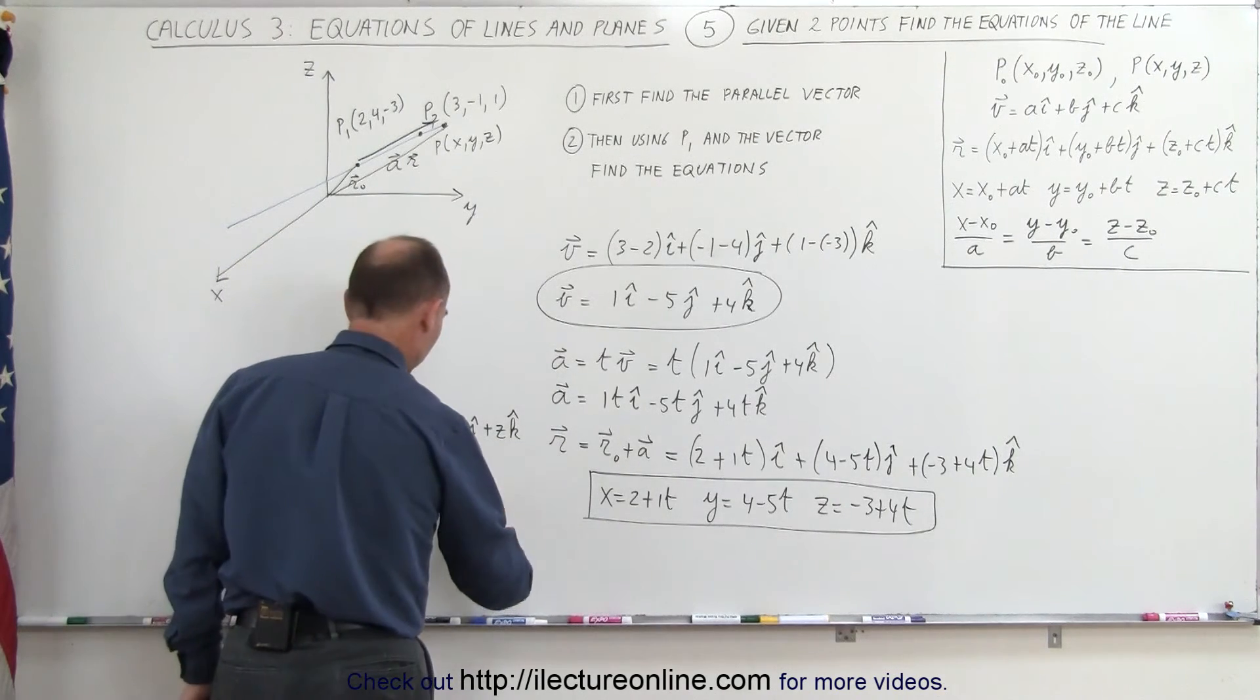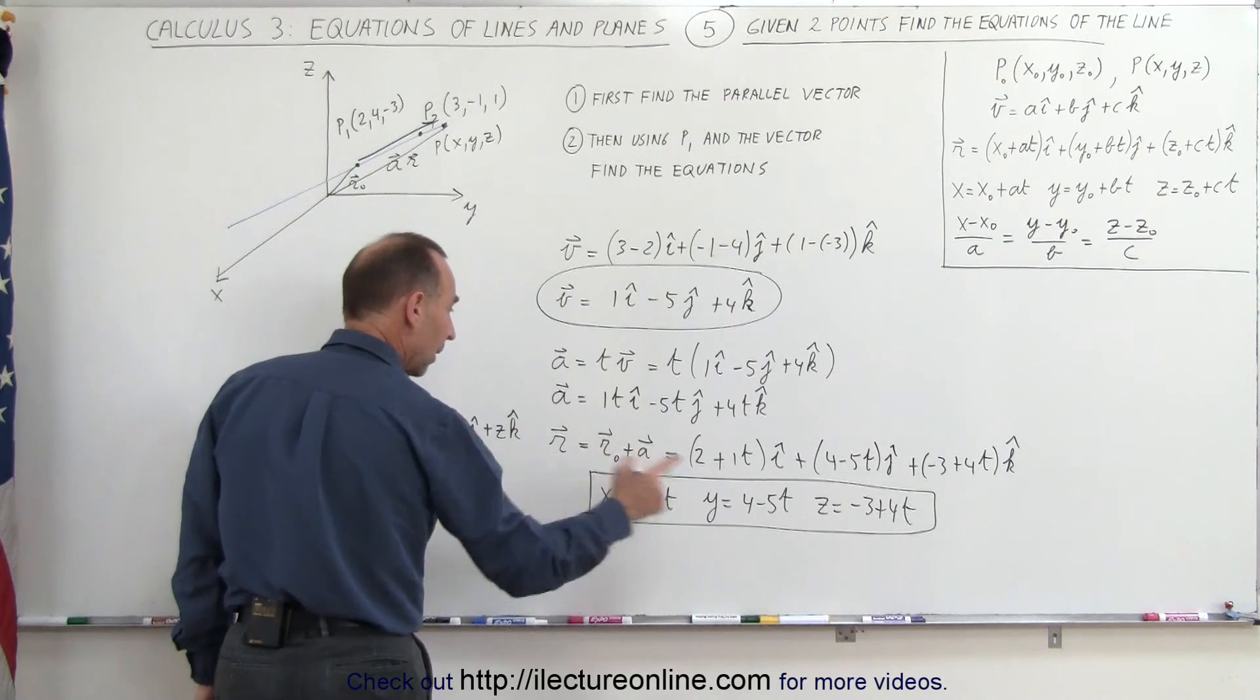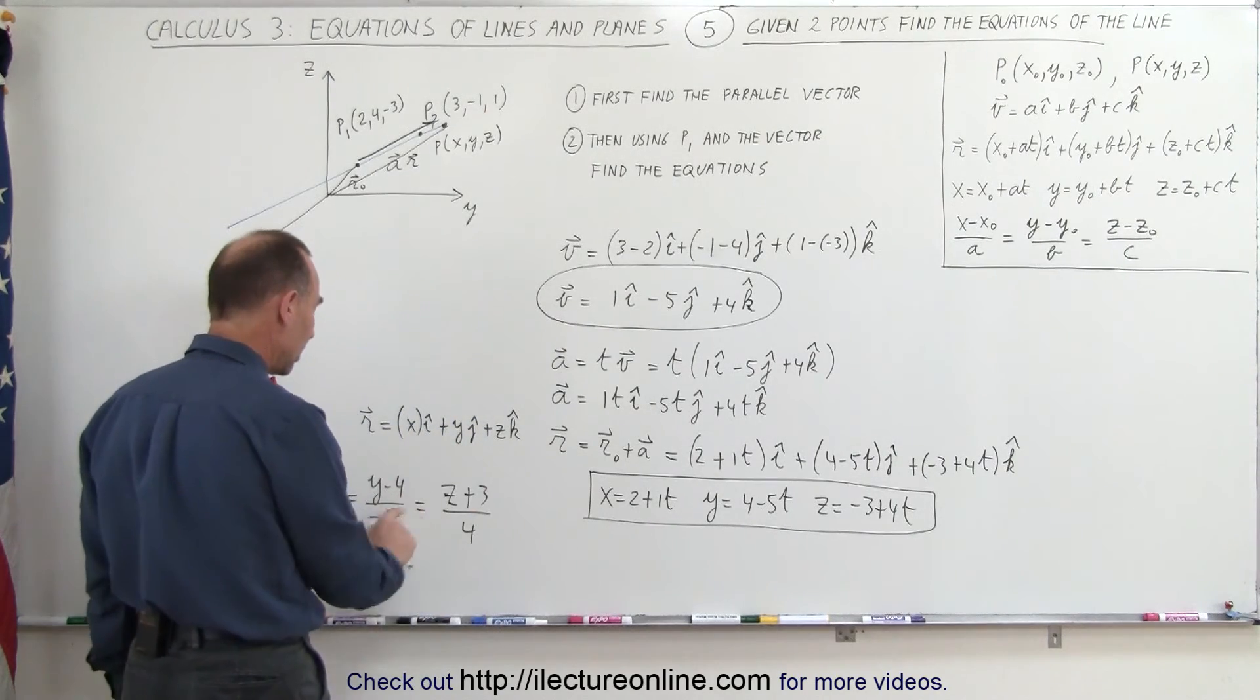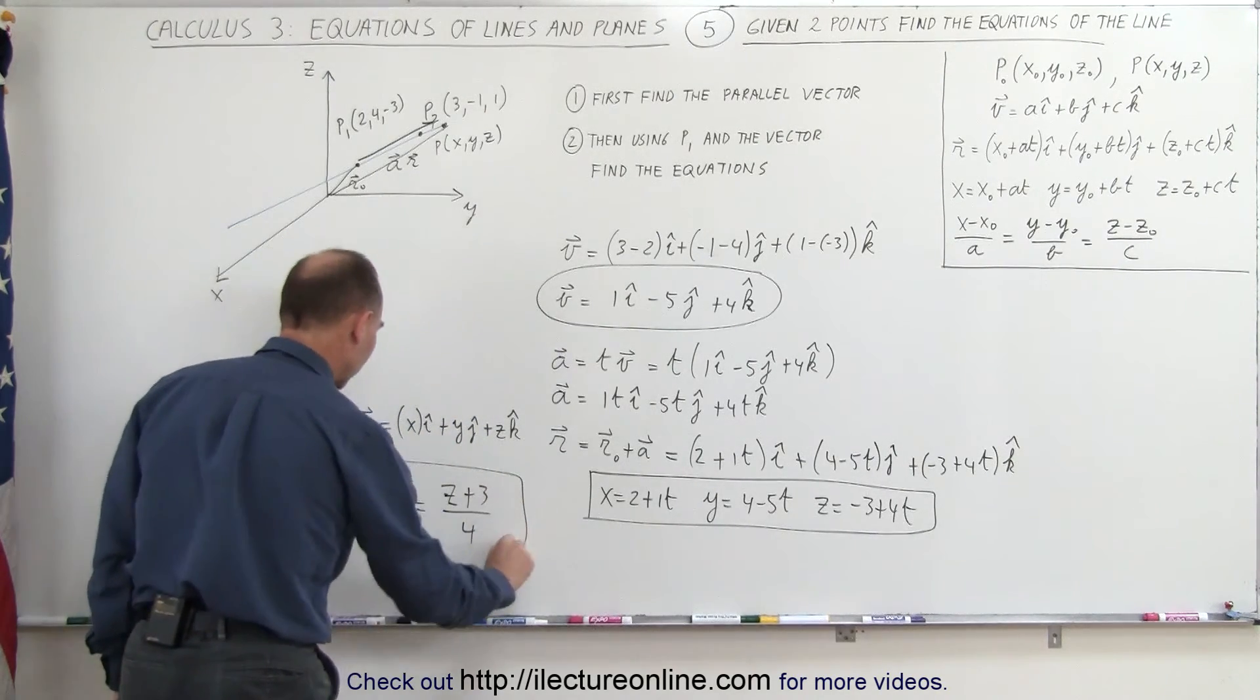We can then move the 4 across, we get y minus 4 divided by minus 5, which is equal to z. When I bring the minus 3 across, it becomes plus 3 divided by 4, and since that all would be equal to t, I know that these are equal to one another as well.